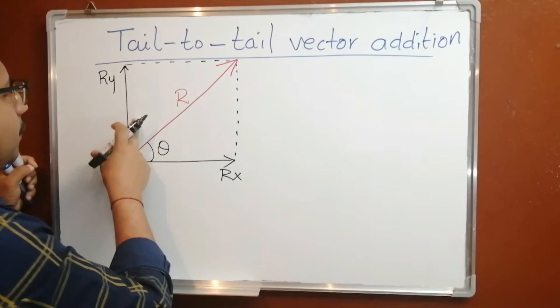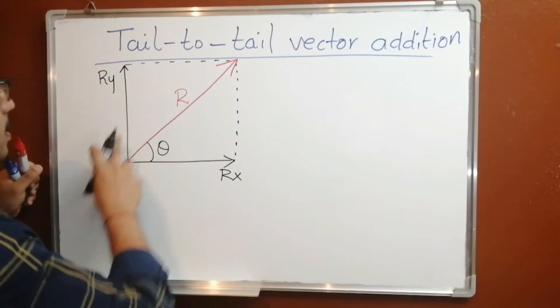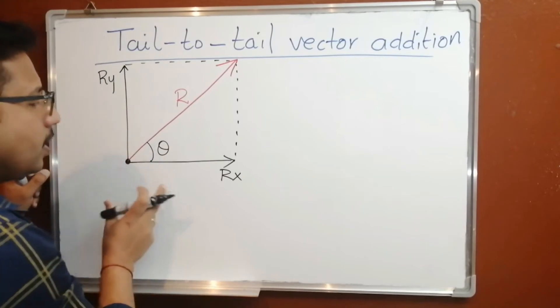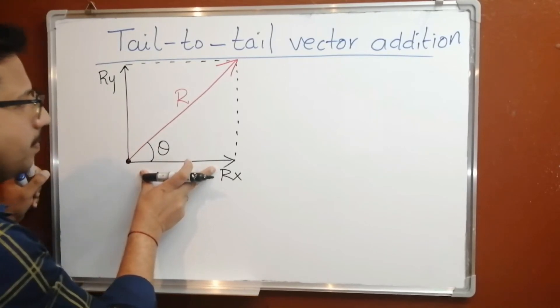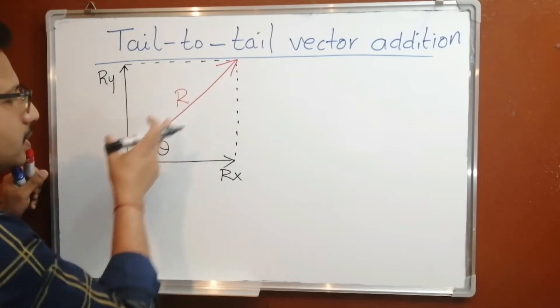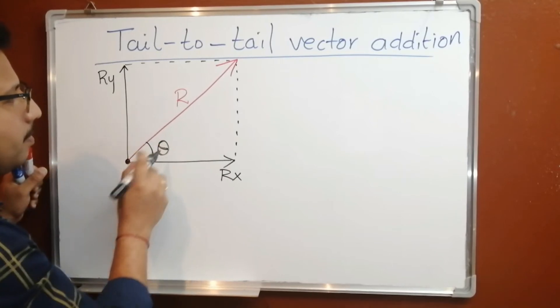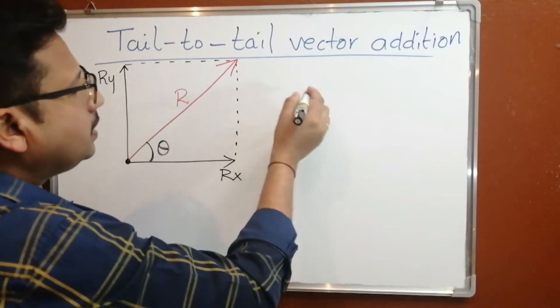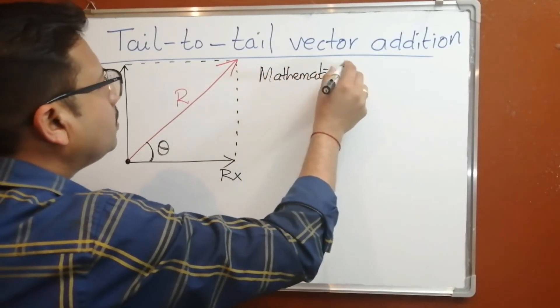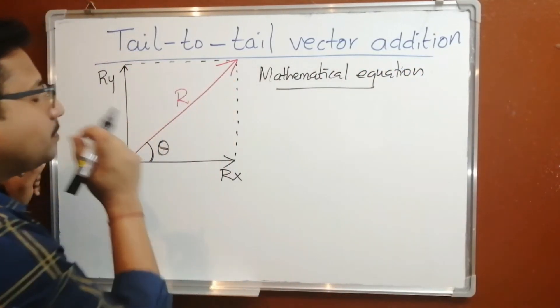If you use the correct and accurate scale system, we can draw this r-y on a paper by using a ruler. And you can draw r-x on a paper by using a ruler. Then you will get the resultant vector r like this. Hence you can even calculate theta by using a protractor. Let's see the mathematical equation to calculate the resultant of these vectors.